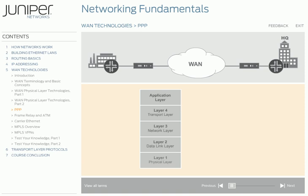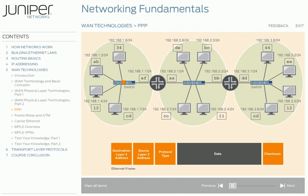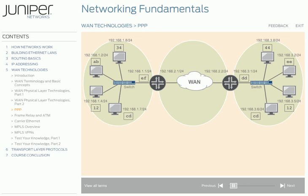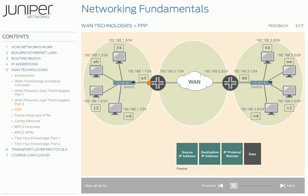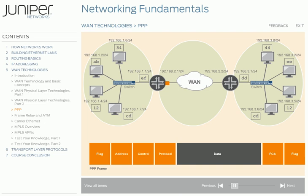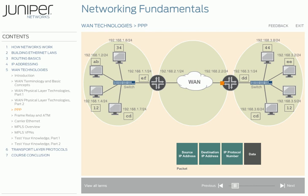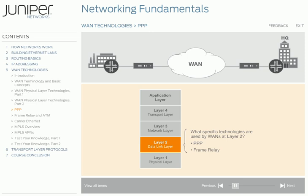Now that we've covered WAN Layer 1 technologies, let's move up the stack and take a look at what specific technologies are used by WANs at Layer 2. Remember that when we looked at Ethernet technologies, we saw how routers and switches use Layer 3 and Layer 2, or MAC addresses, to get the data to its final destination. When data is going over a WAN, different Layer 2 technologies are used, but the basic concept is the same. A router first uses the Layer 3 address to determine the next hop along the way to the destination network. The next hop router strips that frame, performs a route lookup, and adds a new Layer 2 frame suitable for the receiving LAN. The point-to-point protocol, or PPP, frame relay, ATM, and carrier Ethernet are all examples of Layer 2 WAN technologies.